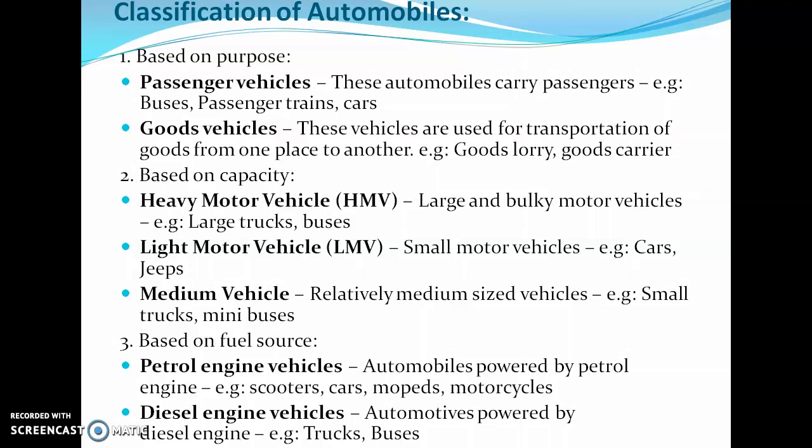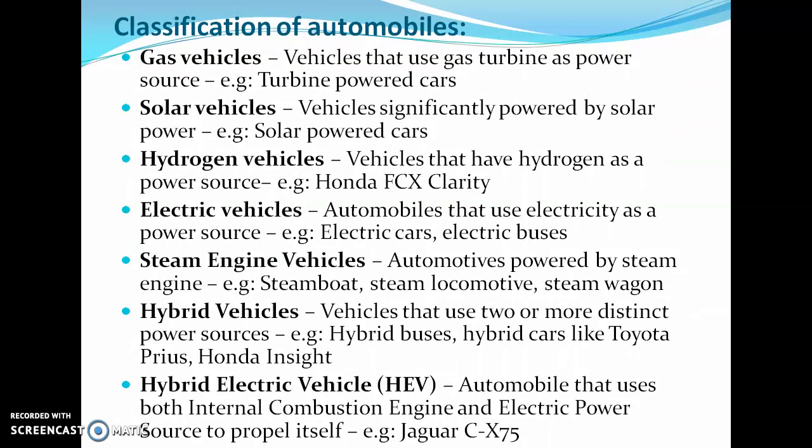The third classification is based on fuel sources used to generate power. Petrol Engine Vehicles use petrol engines, like scooters, cars, mopeds, and motorcycles. Diesel Engine Vehicles include trucks and buses. Gas Vehicles use a gas turbine as a power source, like turbine-powered cars. Solar Vehicles are powered by solar power, such as solar-powered cars.